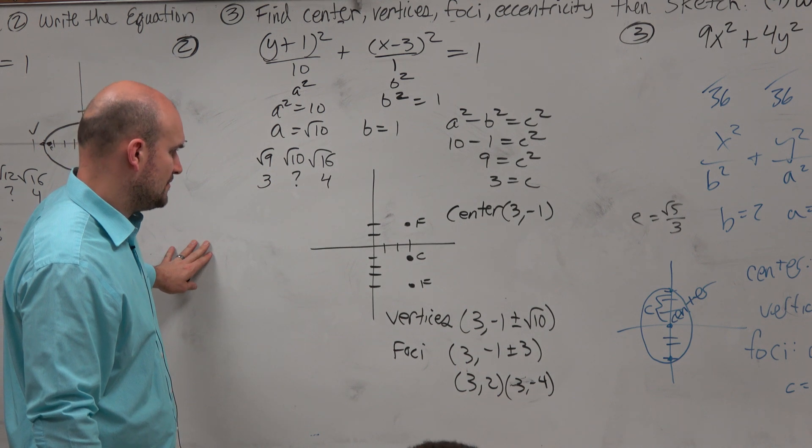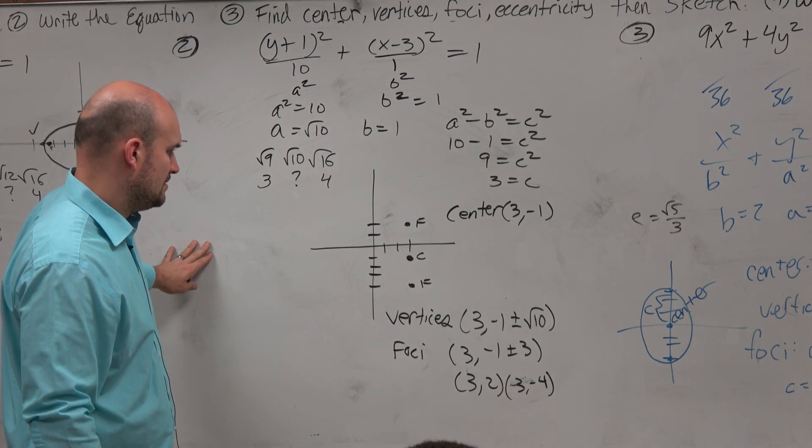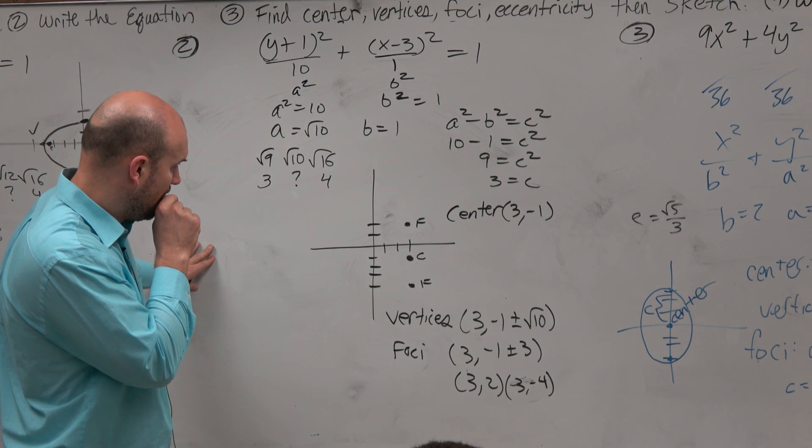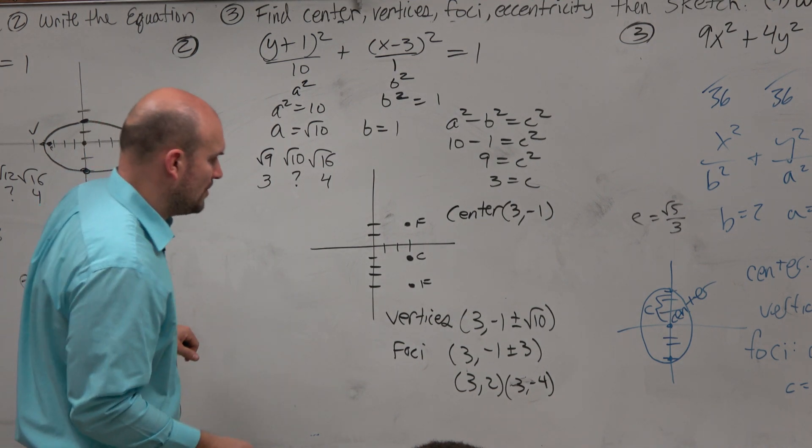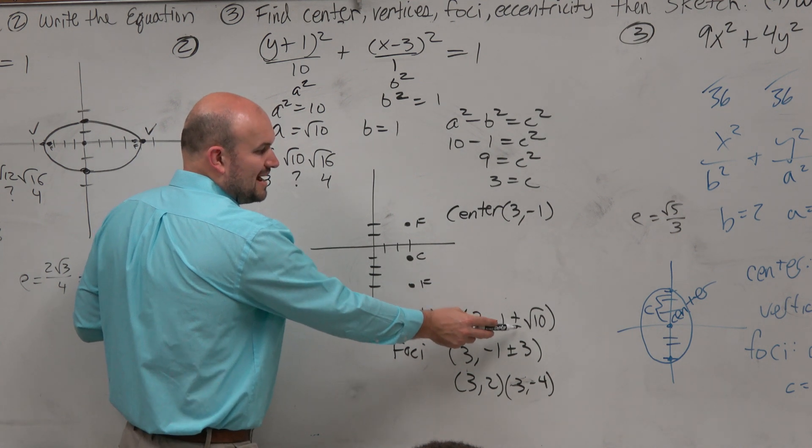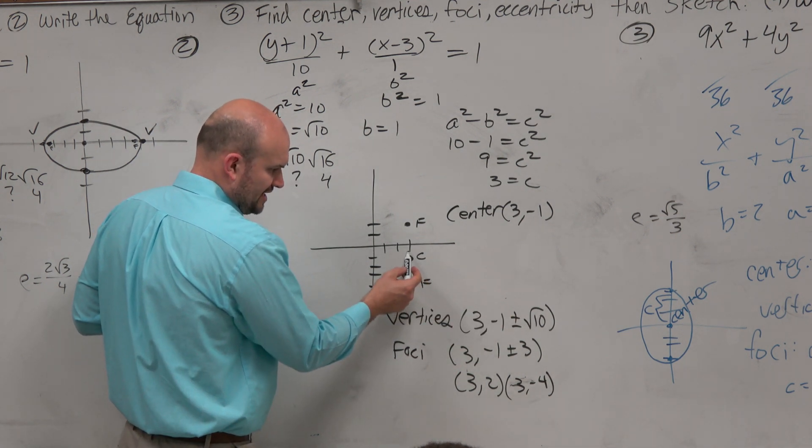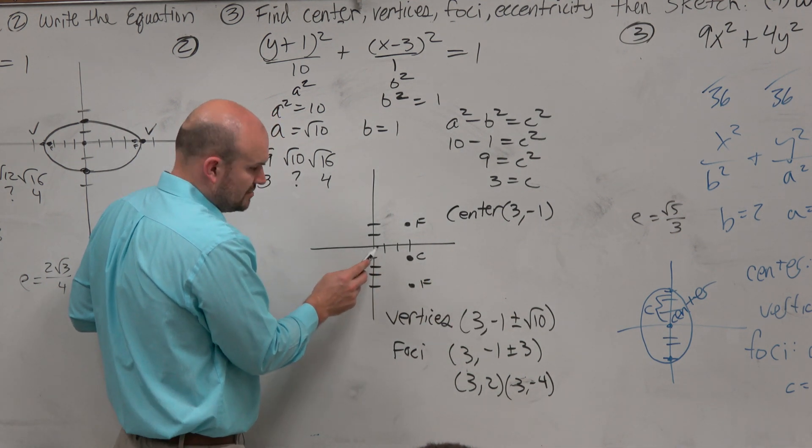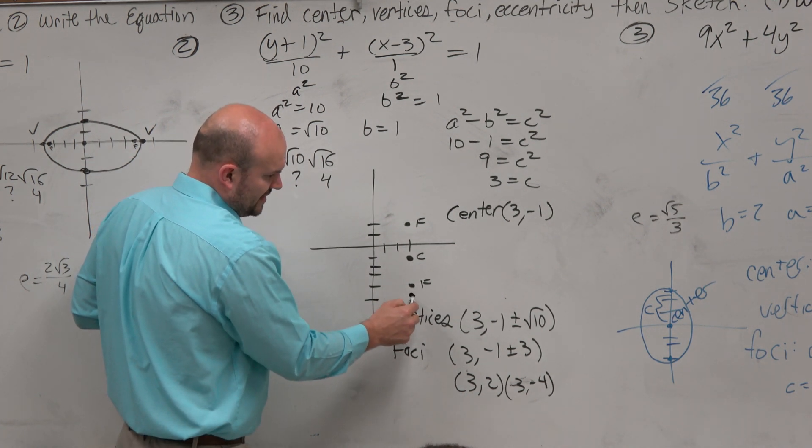Hold on a second. Yeah, minus 4. Minus 4, yeah. So if you do 3 and some things, so negative 1 minus 3 and change, that's going to be like 4 and some change, right? So 1, 2, 3, 4 would be somewhere down there.